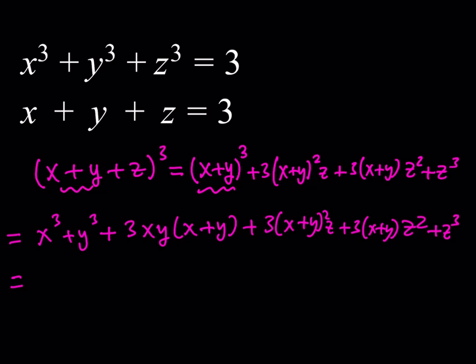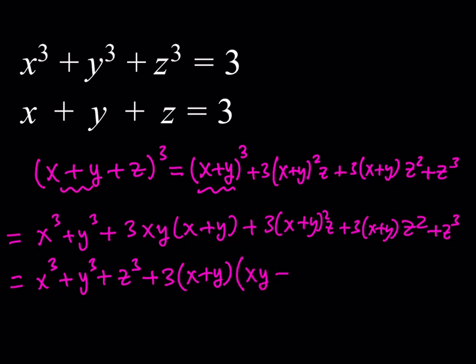What I'd like to do is put these together like x cubed plus y cubed plus z cubed. Then these three remaining terms have a common factor — they all have 3 times the quantity x plus y in them. So let's factor that out: 3 times the quantity x plus y, times the rest, which gives us xy plus z times x plus y, plus z squared.